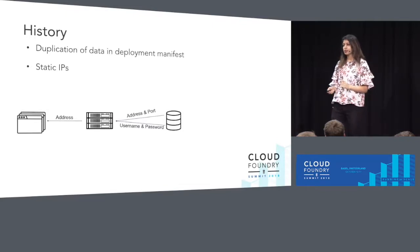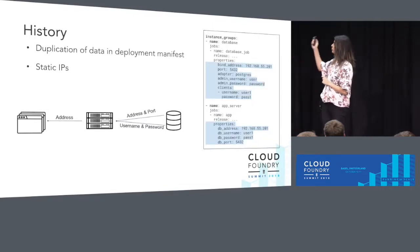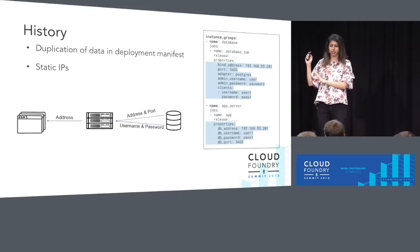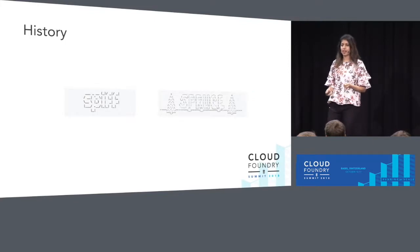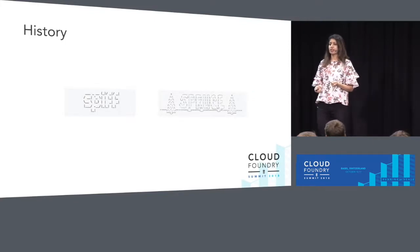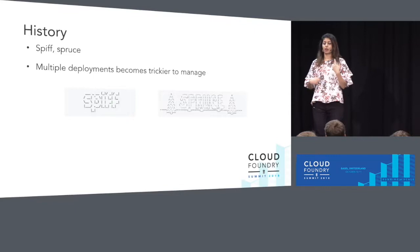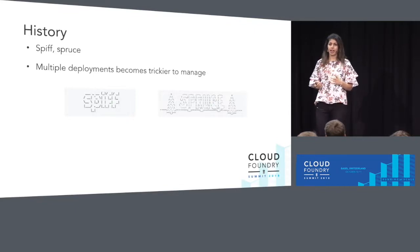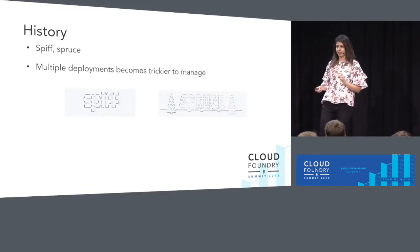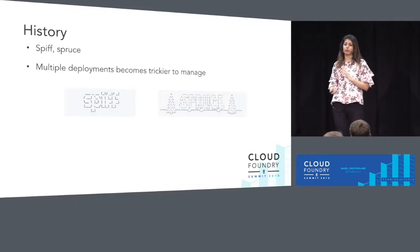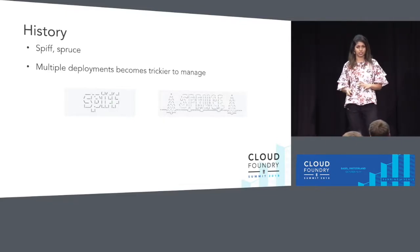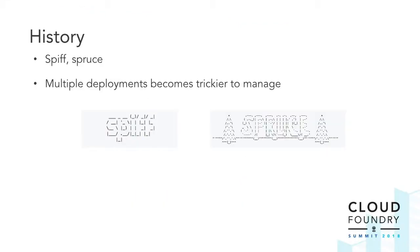Originally, all these components were defined in the manifest and there was a lot of duplicate information, and static IPs were assigned to every single component. Tools like Spiff and Spruce were created to help reduce that, so that they would automatically generate that data and insert it into the templates and the manifest. But they created dependencies, and large deployments were still tricky and hard to manage. These are some of the problems that links were hoping to solve.